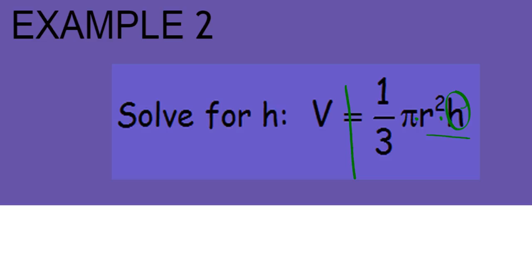The inverse is division. So I'm going to divide both sides by pi r squared. That's going to cancel my pi and my r squared. So I have v divided by pi r squared equals the fraction one-third h.